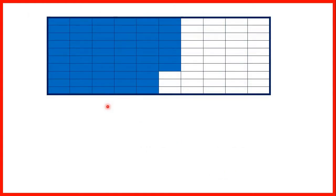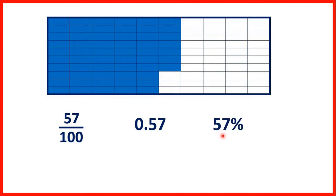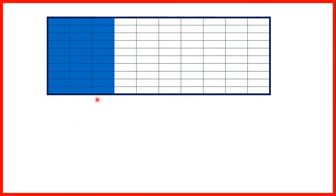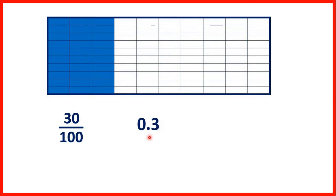Here as a fraction we have 57 hundredths. As a decimal we have 0.57 and as a percentage we have 57 percent. In this fraction bar we have 30 hundredths, which we can write as a decimal as 0.3. We could write 0.30 but we don't need zeros on the ends of decimals. So because 30 hundredths is the same as 3 tenths we can just write 0.3. As a percentage we can write 30 percent because we have 30 parts out of 100 and the percent sign tells us out of 100.